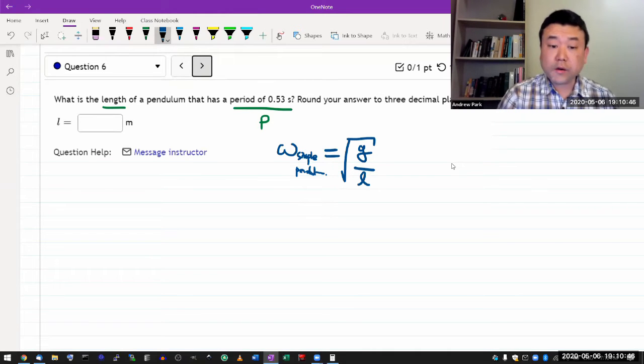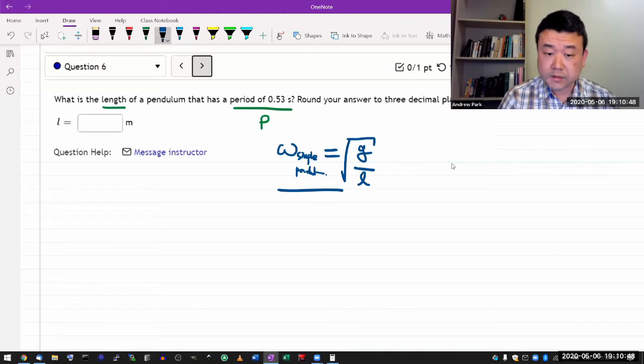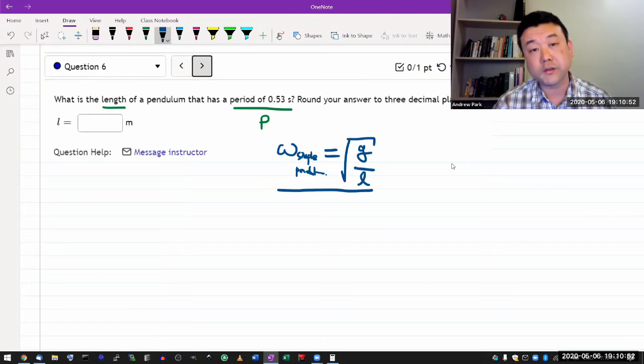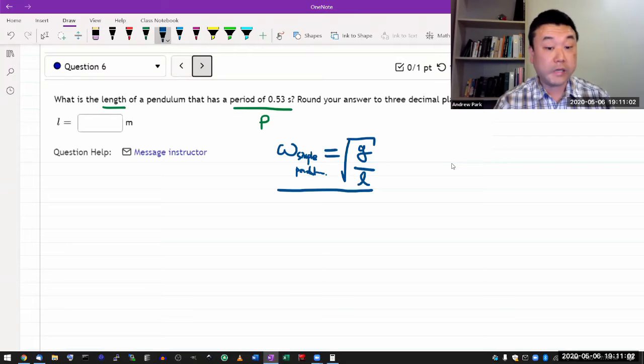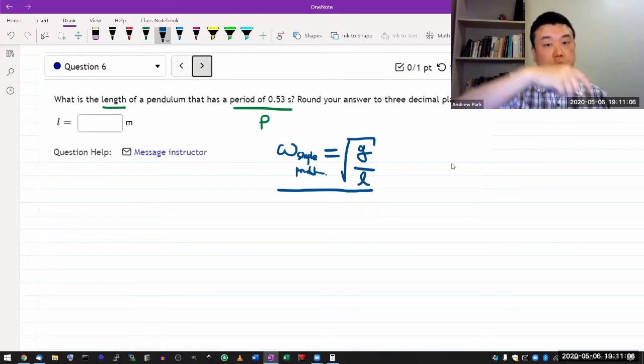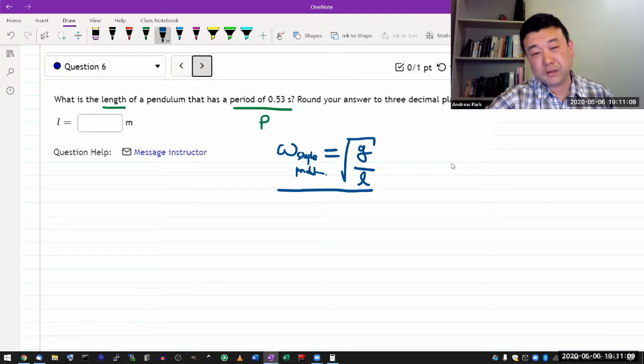The derivation for this demonstrates the value of approximation in physics. When they first derive the equation of motion for pendulum using rotation torque and whatnot, you get a differential equation that looks fairly complicated. It's not solvable.